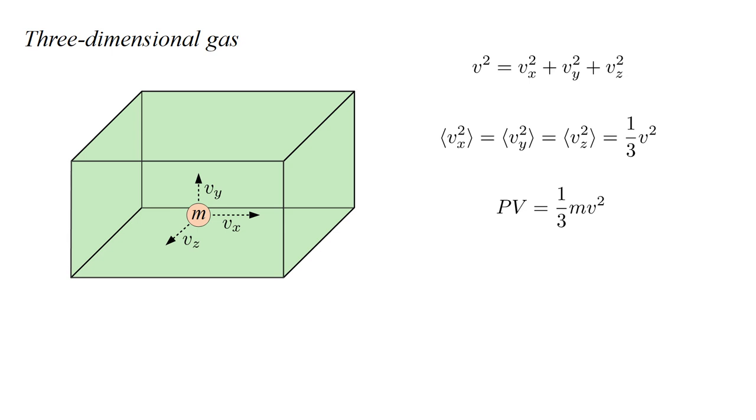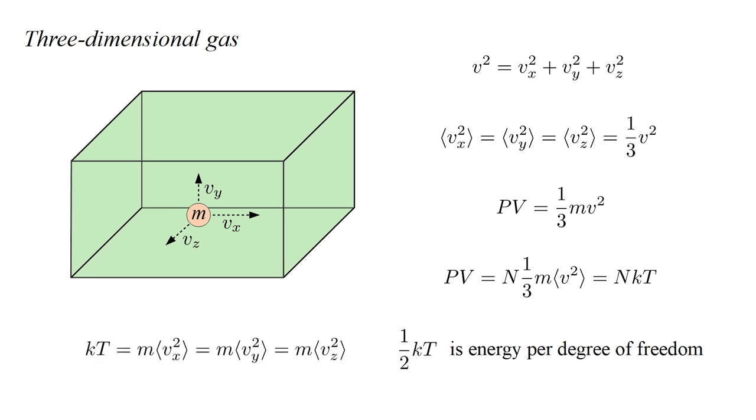For N atoms, this becomes PV equals N one-third M times the mean-square velocity, which equals NKT. Once again, KT equals the mass of a molecule times its mean-square velocity in one dimension. Since kinetic energy is one-half mass times velocity squared, we can say that one-half KT is the kinetic energy of an atom associated with a single dimension, or what we call a degree of freedom.